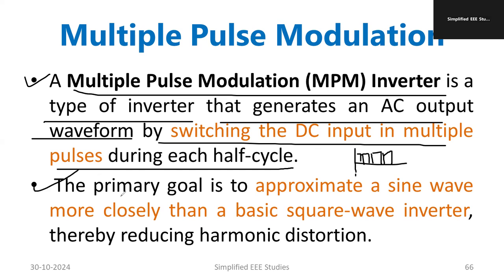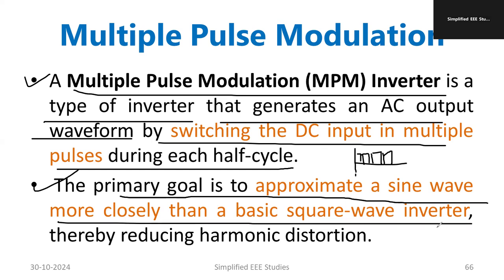The primary goal — the ultimate intention — is to approximate the sine wave more closely than the basic square wave inverter. The output will be approximate to a sine wave compared to a square wave, because most electronic and dedicated instruments operate under a sine wave. By using this technique, the square wave will be almost closer to a sine wave. That is the plus point of this particular inverter.